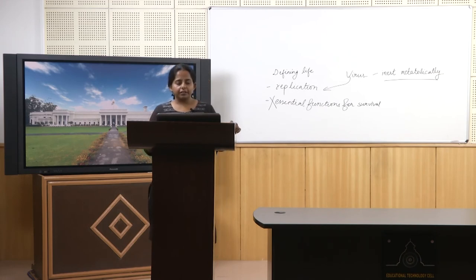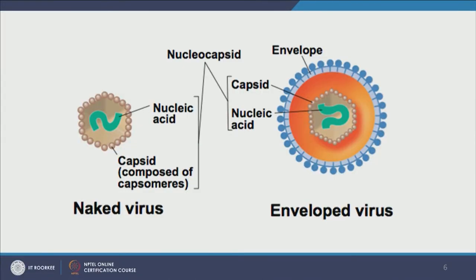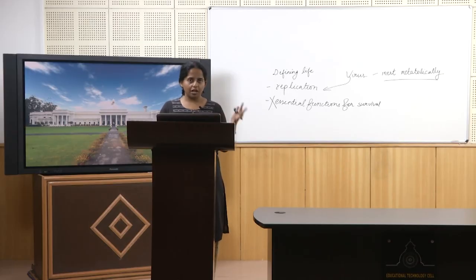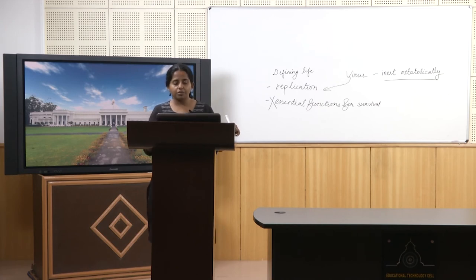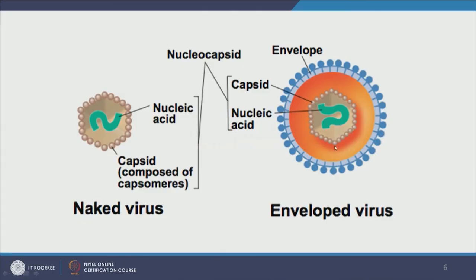Another way to classify viruses is by their morphology. There are basically two kinds: naked viruses and enveloped viruses. A naked virus just has a protein coat capsid with the nucleic acid inside. An enveloped virus has a protein envelope around a capsid which contains the nucleic acid. Similar to the difference between prokaryotes and eukaryotes, naked viruses don't have the envelope but enveloped viruses do. The region inside the capsid including the capsid itself is called the nucleocapsid.